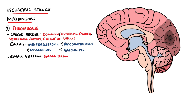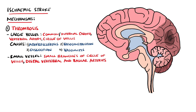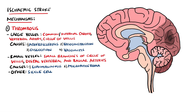Small vessel disease involves smaller branches of the circle of Willis and arteries in the distal vertebral and basilar arteries. Causes here include lipohyalinosis, which is a buildup of fatty hyaline matter secondary to hypertension and aging, as well as micro atheromas, which are small atherosclerotic plaques. Thrombi can also be caused by sickle cell red blood cells clumping together, and thrombi may also generate emboli, which are the second mechanism for ischemic stroke.